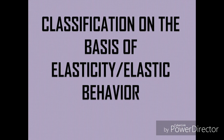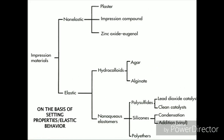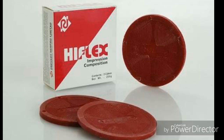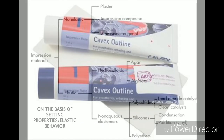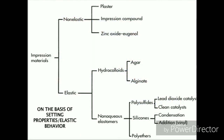The most commonly used classification is the one based upon the elasticity and elastic behavior of the impression materials. On the basis of elasticity, impression materials are divided into two types: non-elastic or rigid impression materials, and elastic impression materials. Impression plaster, impression compound, and zinc oxide eugenol impression paste are the three impression materials which fall into the category of non-elastic impression materials.